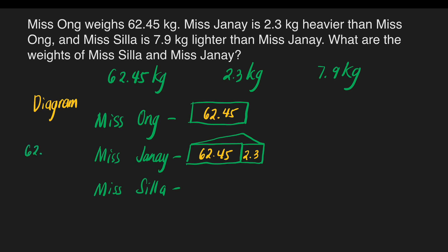Let's add these two boxes to find the weight of Miss Hanai. We compute 62 and 45 hundredths plus 2 and 3 tenths. Make sure the decimal points are aligned, and write zeros in empty spaces for easy solving. 5 plus 0 is 5, 4 plus 3 is 7, copy the decimal point, 2 plus 2 is 4, bring down 6. Miss Hanai weighs 64 and 75 hundredths kilograms.